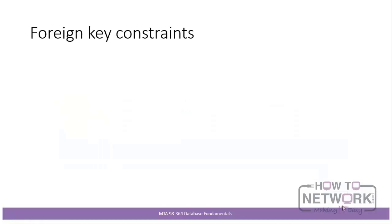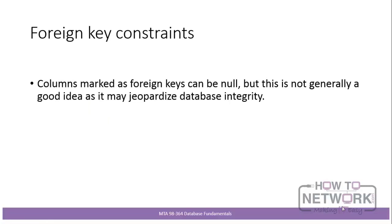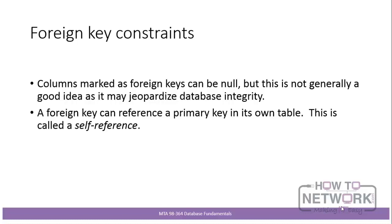For example, the part number in the parts table — probably the primary key — will be specified as a foreign key in all sales records that record sales of that part. It's the pairing of primary keys and foreign keys that forms the skeleton of a relational database. Regarding foreign key constraints: it's possible for a foreign key to be null, but this should generally be avoided. Also, a foreign key can reference a primary key in its own table — called a self-reference or self-referencing foreign key.